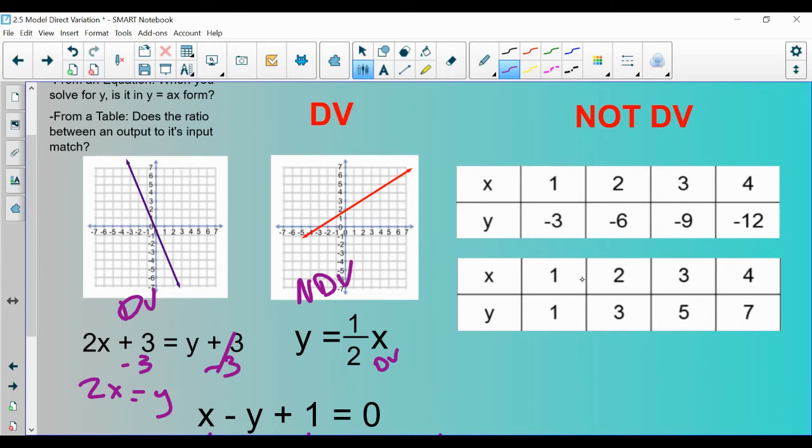When we look at the second example, when you take the y value divided by the x value, here you get 1. Here you get 1.5. Here you get 5 thirds, 7 fourths. This is not direct variation, right? So not direct variation, not direct variation, and not direct variation, but the rest of those would be direct variation.